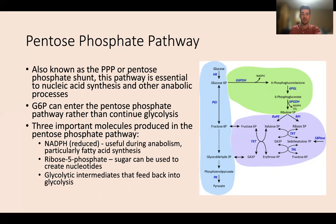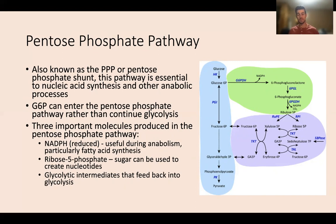The pentose phosphate pathway is just another energetic pathway we use to create important biomolecules like NADPH and ribose-5-phosphate, with glycolytic intermediates feeding back in. The names of the specific glycolytic intermediates aren't really important — it's just important to understand why it's called a shunt: reactants are pulled from glycolysis and returned partway through so nothing is wasted.